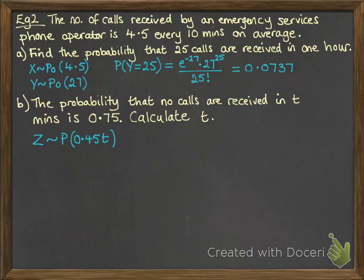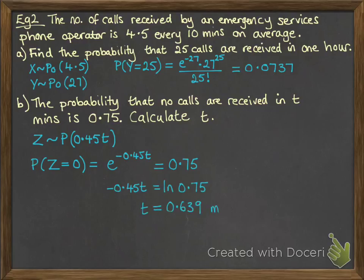Now we are told that the probability that there are no calls will be 0.75. So the probability that Z equals 0 can be written as e to the minus 0.45t, and we know that it's equal to 0.75. So now we can use laws of logs to work that out, and we get t equals 0.639 minutes.